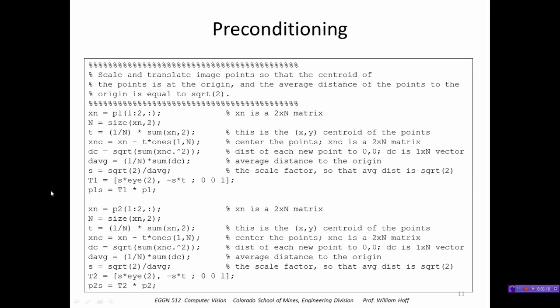Here is how we do the preconditioning: we calculate the centroid of the first set of points p1, subtract that off, calculate the distance to the origin, and scale by that amount. We form a transformation matrix called t1 which performs that translation and scaling of the points p1. We do the same thing for the points p2, forming another transformation matrix called t2. Now we have scaled and translated points p1s and p2s that we can use to calculate the essential matrix.